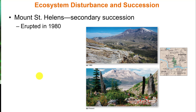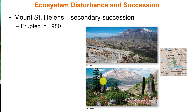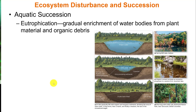Another area studied for ecosystem disturbance and succession is around Mount St. Helens, which erupted in 1980. There is a continuum of intact ecosystems that weren't affected by the eruption right next to ecosystems in the process of developing, making it a great study site for botanists and ecologists looking at succession.